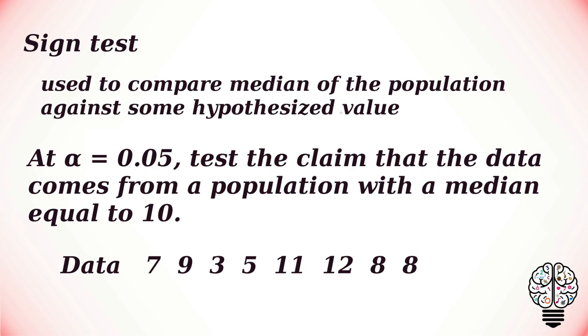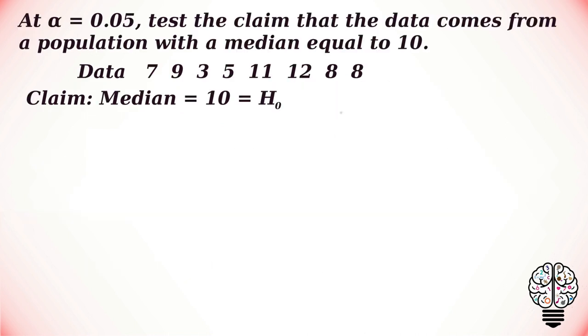At the 5% level, test the claim that the data comes from a population with a median equal to 10. If the claim has equal to sign, then it makes the same as H₀. H₀ is our null hypothesis which is equal to 10, and our alternative hypothesis is Hₐ that is not equal to 10.